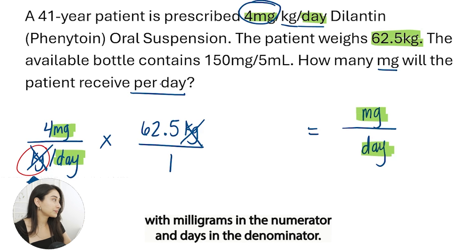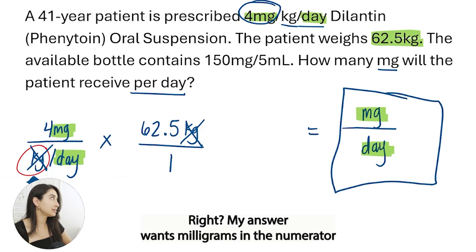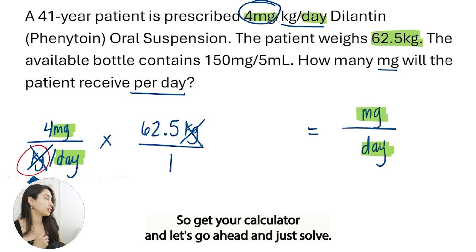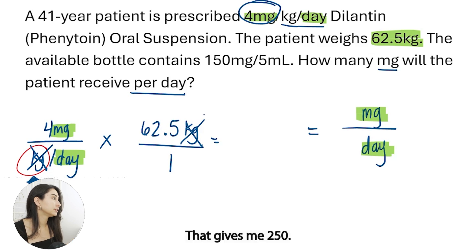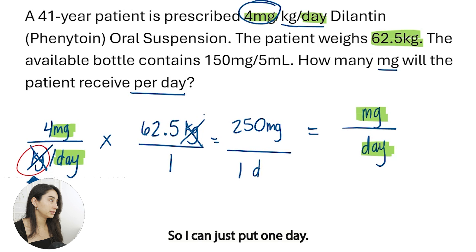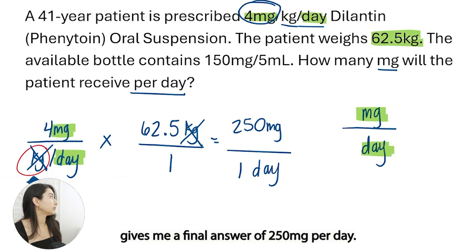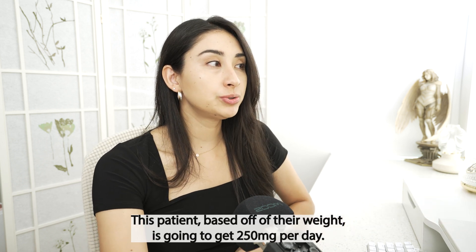I'm left with milligrams in the numerator and day in the denominator — exactly what I want. My answer wants milligrams in the numerator and day in the denominator, so now I can go ahead and solve. Get your calculator: four times 62.5 gives me 250 milligrams. On the bottom, I have one and day, so I put one day. 250 divided by one day gives me a final answer of 250 milligrams per day. This patient, based on their weight, is going to get 250 milligrams per day.